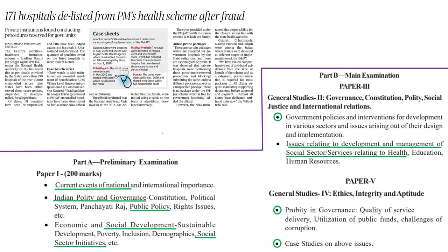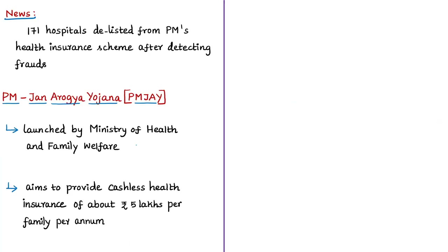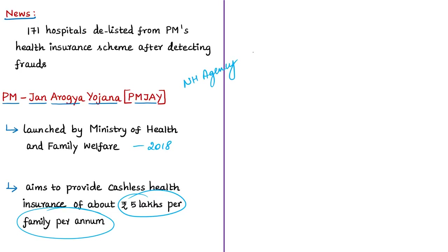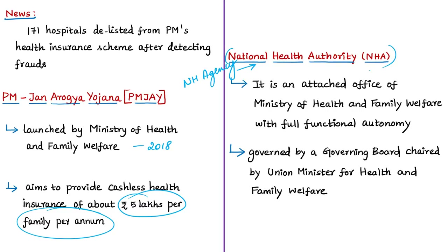The next news article discusses frauds detected at different stages of implementation of the Pradhan Mantri Jan Arogya Yojana (PMJAY). This scheme, launched by the Ministry of Health and Family Welfare in September 2018, aims to provide cashless health insurance of rupees 5 lakhs per family per annum. For better implementation, the National Health Agency was dissolved in January 2019 and replaced by the National Health Authority with full functional autonomy pursuant to a cabinet decision. The National Health Authority is an attached office of the Ministry of Health and Family Welfare, governed by a board chaired by the Union Minister for Health, and is the apex body for implementing PMJAY.